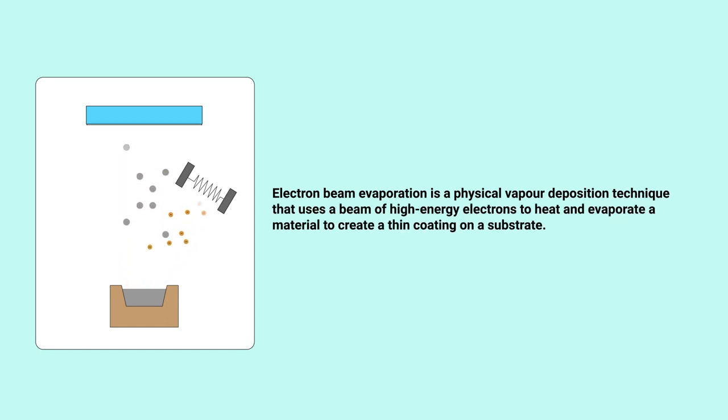Electron beam evaporation is a physical vapor deposition technique that uses a beam of high-energy electrons to heat and evaporate a material to create a thin coating on a substrate.